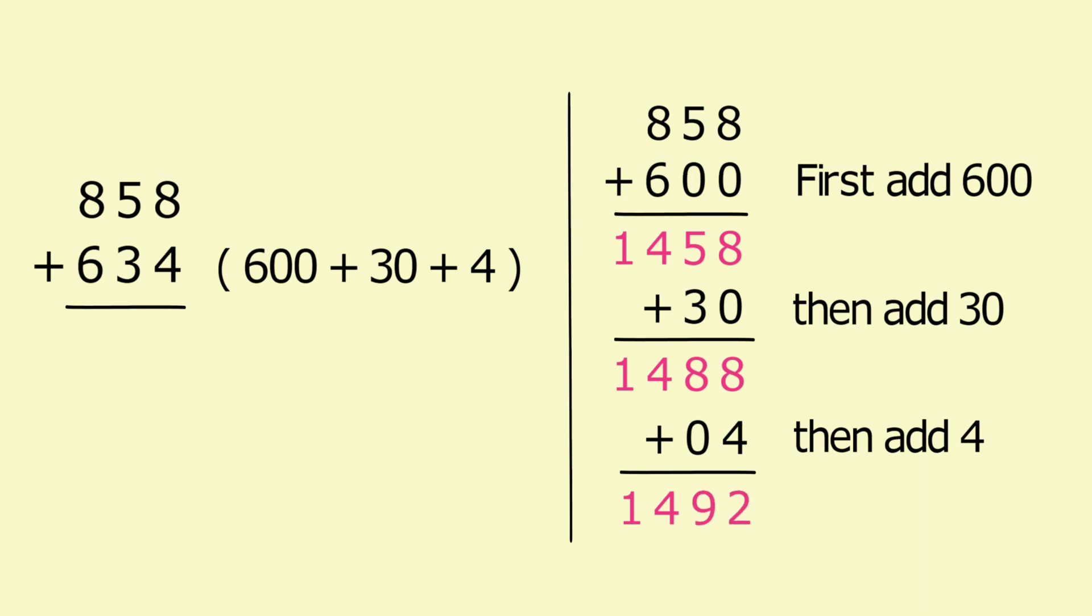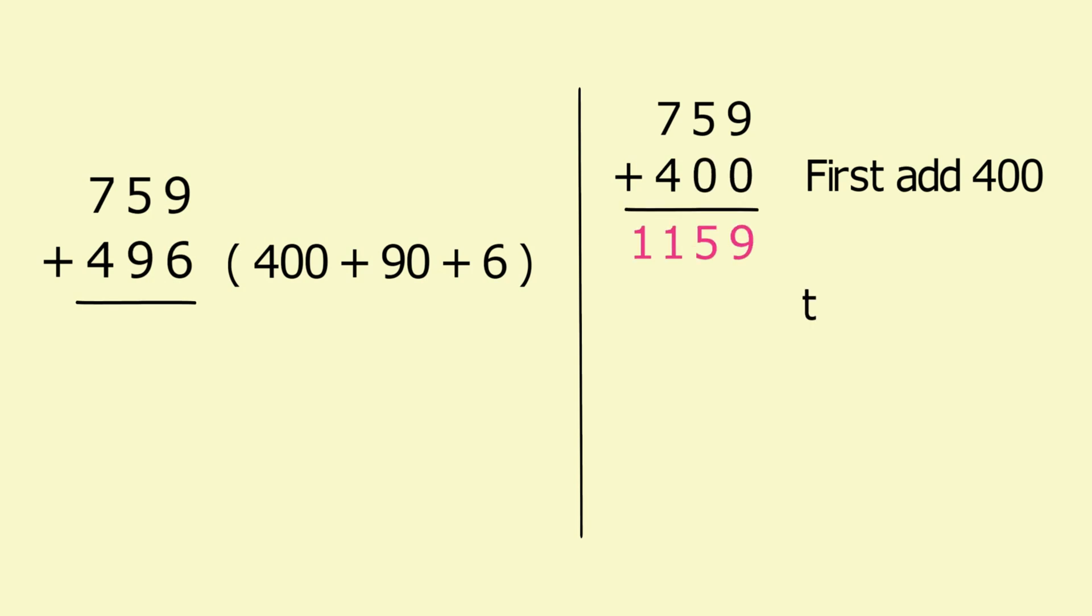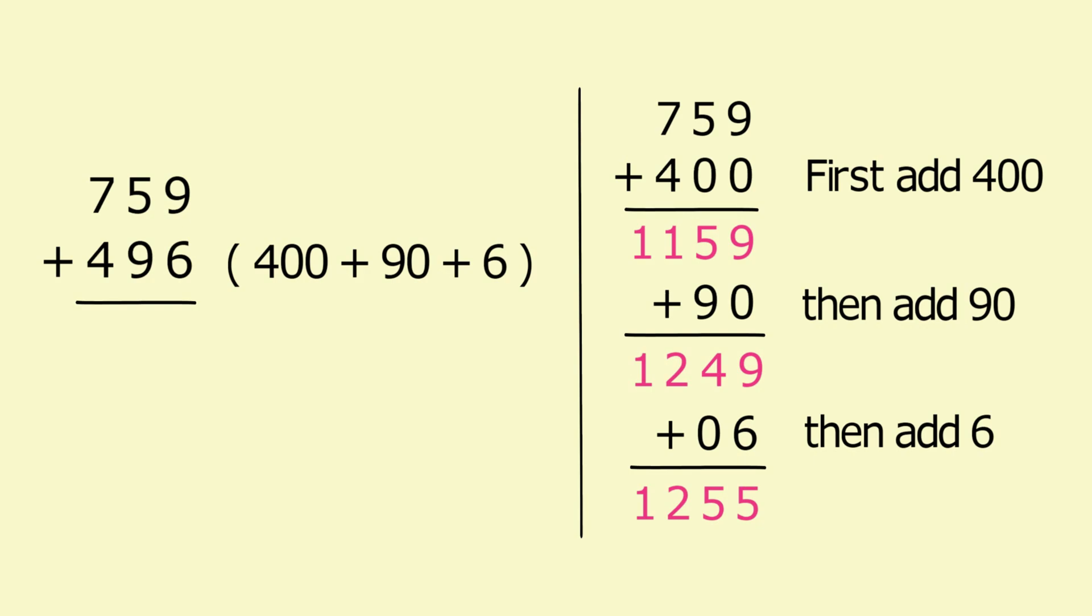Now let's try another one for practice. 759 plus 496. We can write 496 as 400 plus 90 plus 6. Now pause the video and do it in your mind first, then check our computation. This addition problem is a little more difficult than the last one, since it requires you to carry a number in all 3 steps. However, with this particular problem you have the option of using an alternative method. I am sure you will agree that it is a lot easier to add 500 to 759 than to add 496. So try adding 500 and then subtracting the difference.